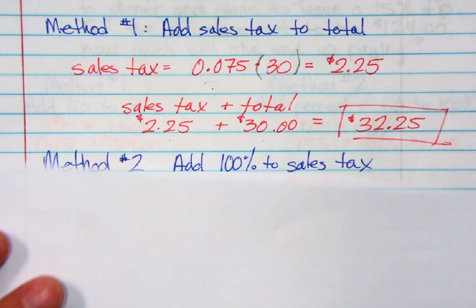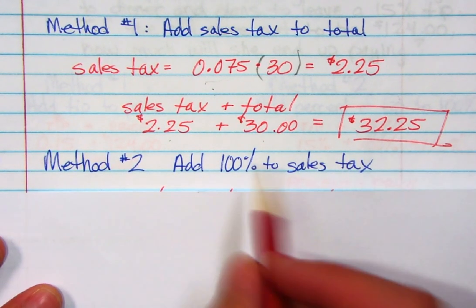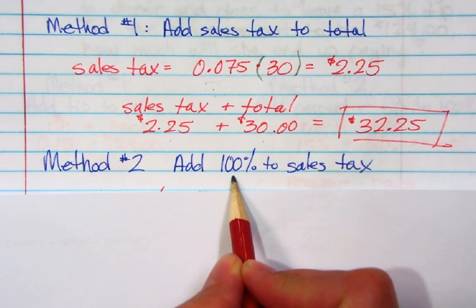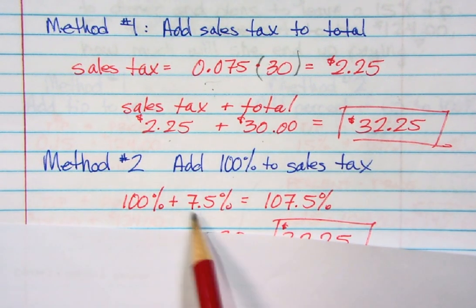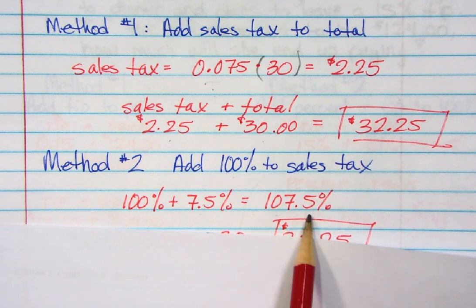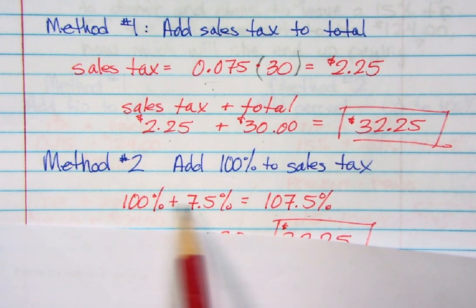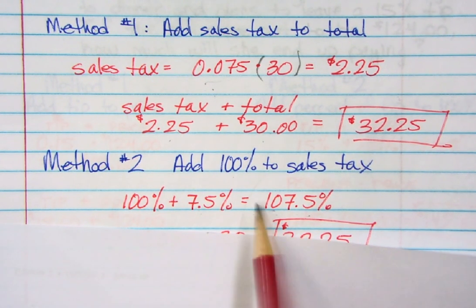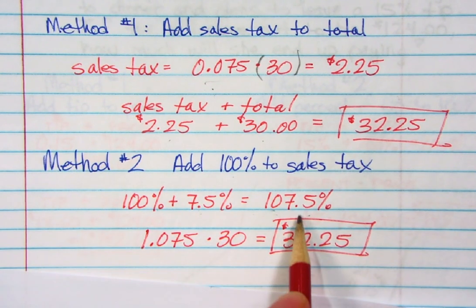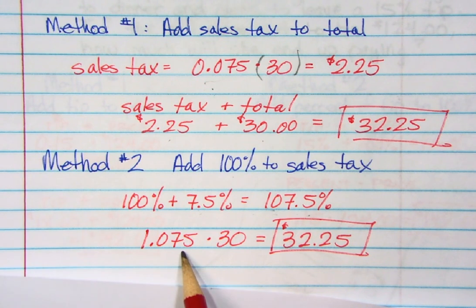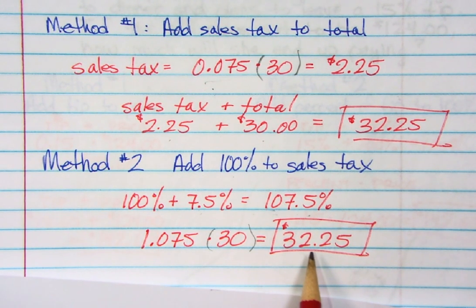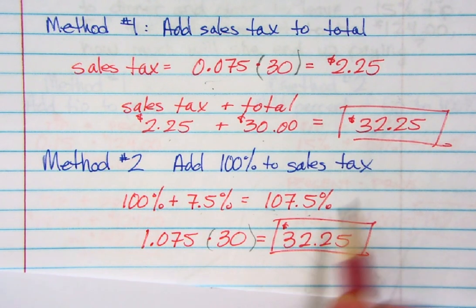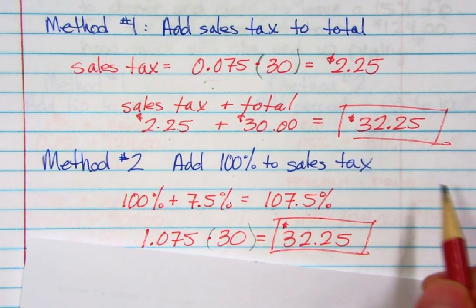Method two: the game is 100% and the sales tax is 7.5%, so added together you really have to pay 107.5%. Change 107.5% to a decimal — move the decimal twice — and you get 1.075. Multiply 1.075 times $30 and you find that $32.25 is the entire amount you have to pay. Again, both methods give the exact same answer.